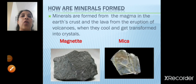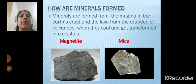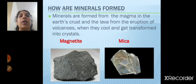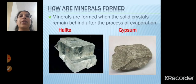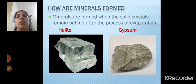Now let's see how minerals form. Magnetite and mica are two minerals which are formed from the magma in the earth's crust and the lava from the eruption of volcanoes. When they cool, they get transformed into crystals. Magma in the earth's crust is the hot semi-liquid rock inside the earth's crust, and from volcanoes there is an eruption of lava. Halite and gypsum are minerals formed when solid crystals remain behind after the process of evaporation.